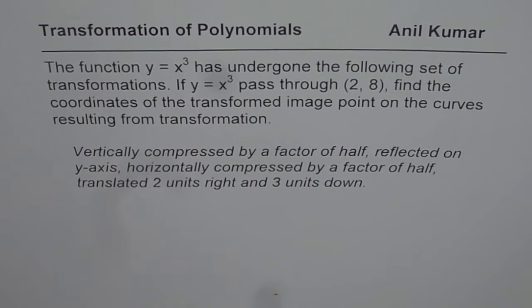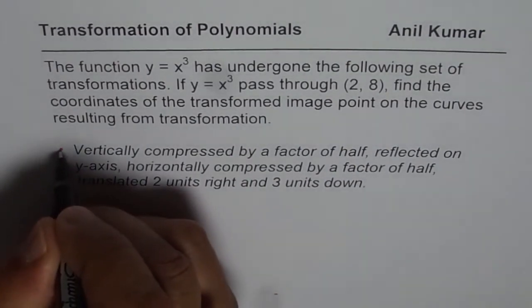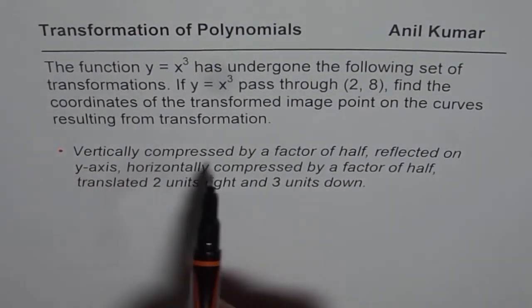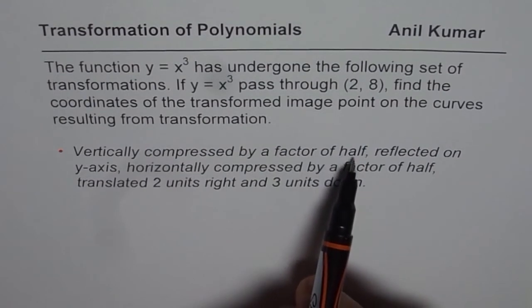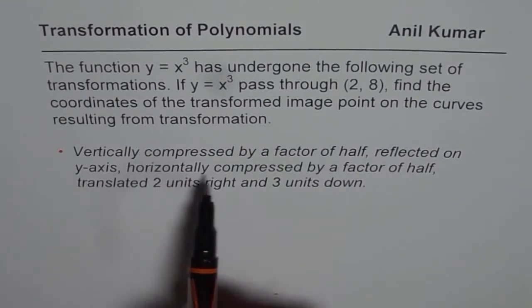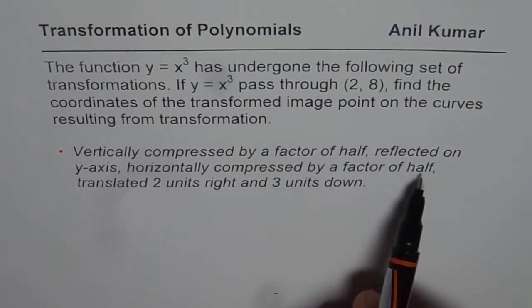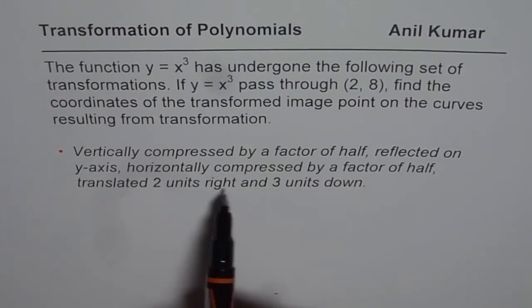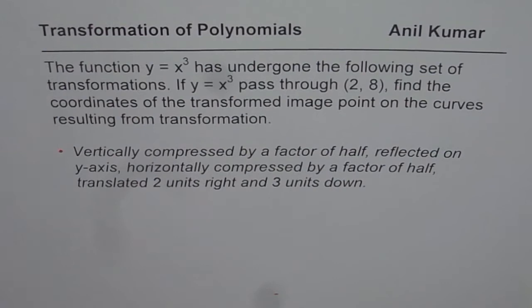Now, the description of the transformation is here. It says vertically compressed by a factor of half, reflected on y-axis, horizontally compressed by a factor of half, translated 2 units right and 3 units down. So I've taken all kinds of transformations here.